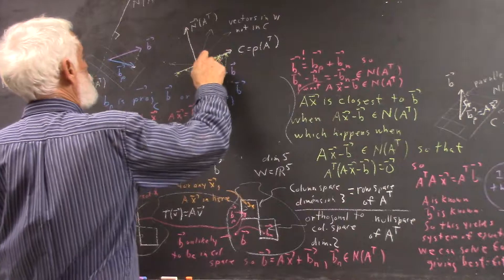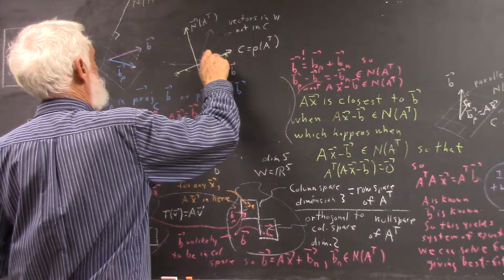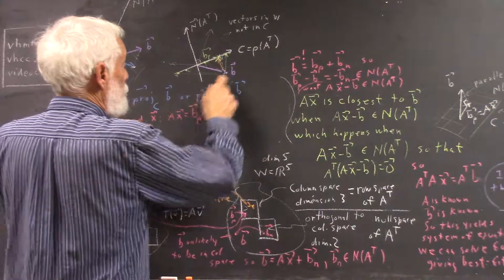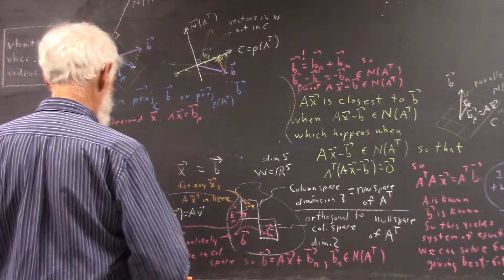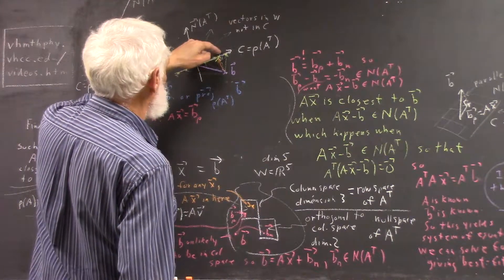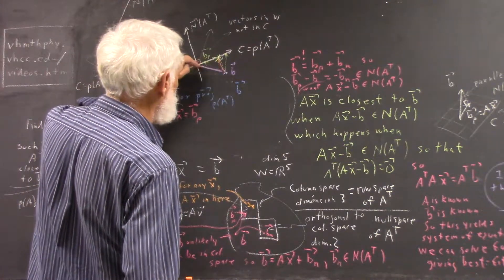And this vector is our B sub rho. This vector is our B. And let's see.